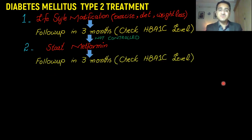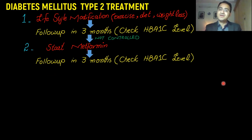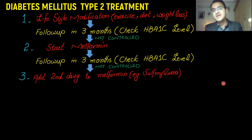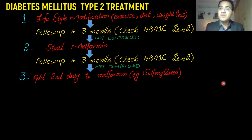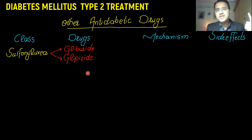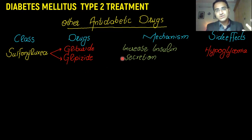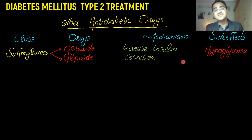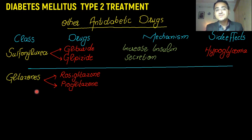You put the patient on metformin and ask them to come back in three months. If HbA1c is still greater than seven percent, you move to third-line therapy — you add a second drug to metformin. That second drug can be sulfonylurea or other hypoglycemic drugs. Sulfonylureas include glyburide and glipizide; their mechanism of action is to increase insulin secretion from the pancreas, but the side effect is an increased risk of hypoglycemia.